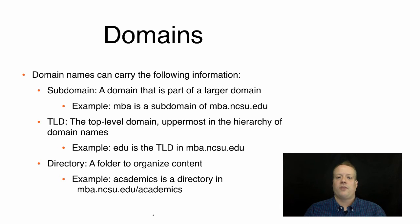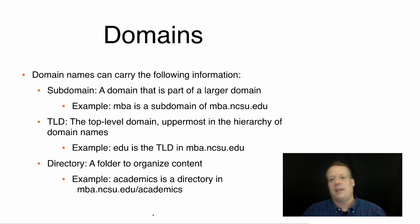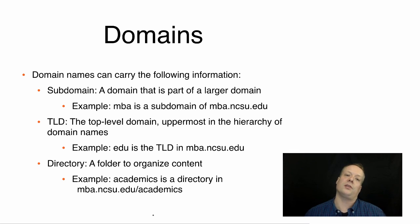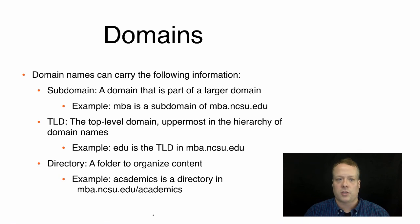Finally, there is a directory, which can appear after the domain name and specifies a particular piece of content you want from that server. So you can go to mba.ncsu.edu and ask specifically for the academics directory, or even academics/online-programs, and so on. Hopefully this gives you some basic terminology as we go through digital marketing, so you can understand how these communication protocols work and how we use them to direct consumers to different parts of the web.